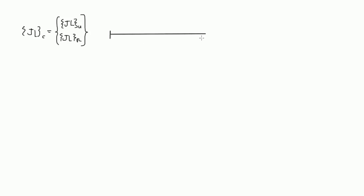Let's consider a beam with a fixed end on both sides and a roller in between. We'll call the two spans element 1 and element 2. Now let's say we have a point load P at the middle of span 1, and a uniformly distributed load W on element 2.